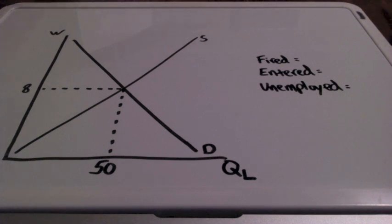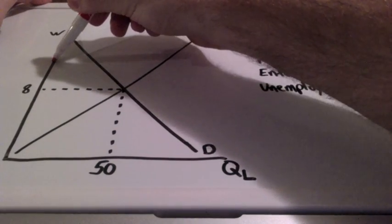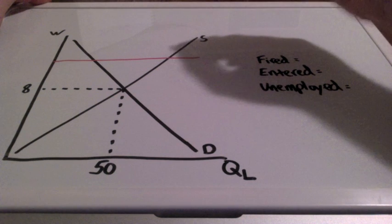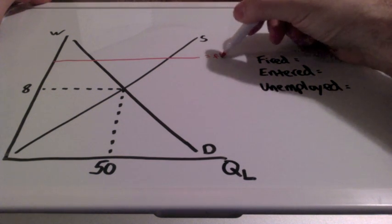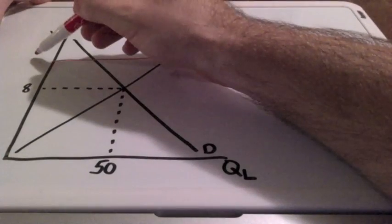Let's say that the government decides to enact a wage floor which will be drawn above the equilibrium wage. And let's say that this wage floor is $10.